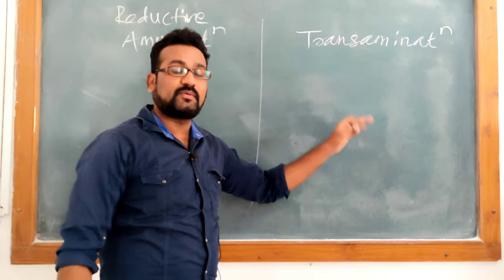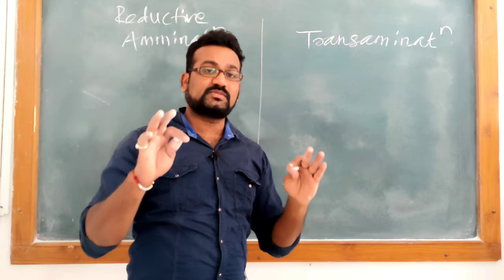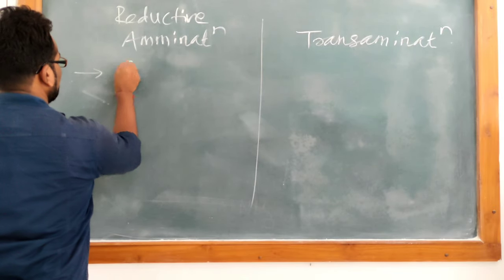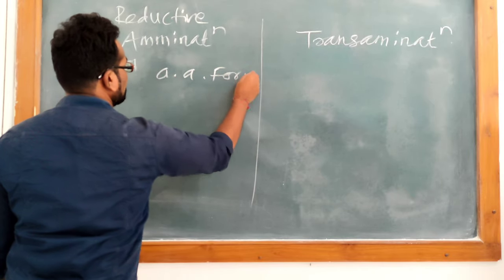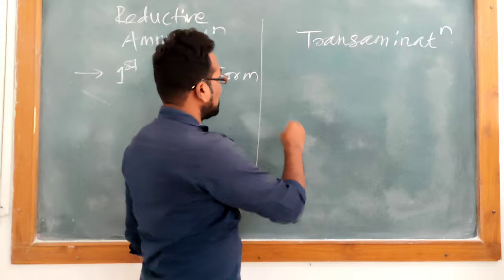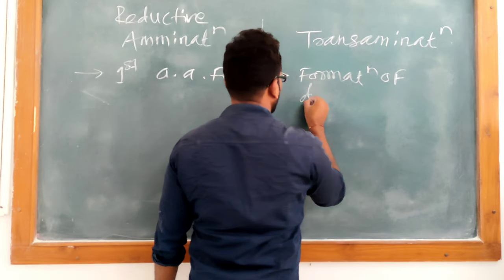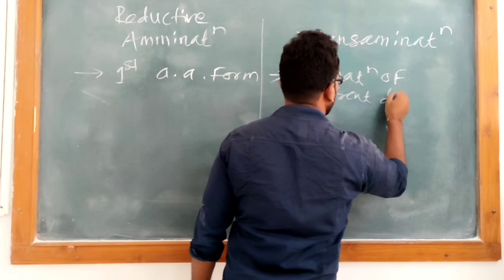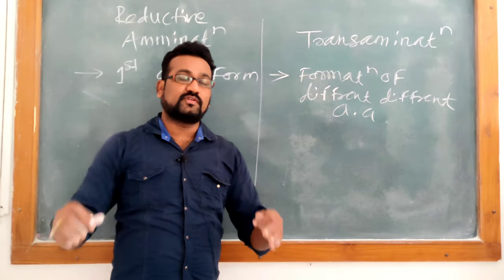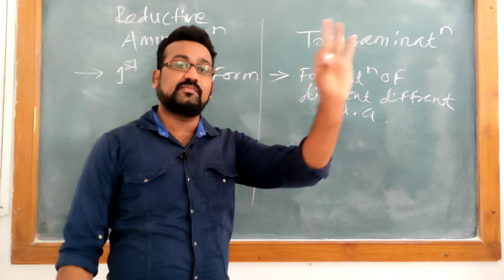On the board I have written two different types of reactions: Reductive Amination and Transamination. What is the difference between them? Reductive Amination is the process in which the first amino acid formation takes place. Transamination involves formation of different amino acids. So reductive amination synthesizes the first amino acid, whereas transamination involves formation of many different amino acids.